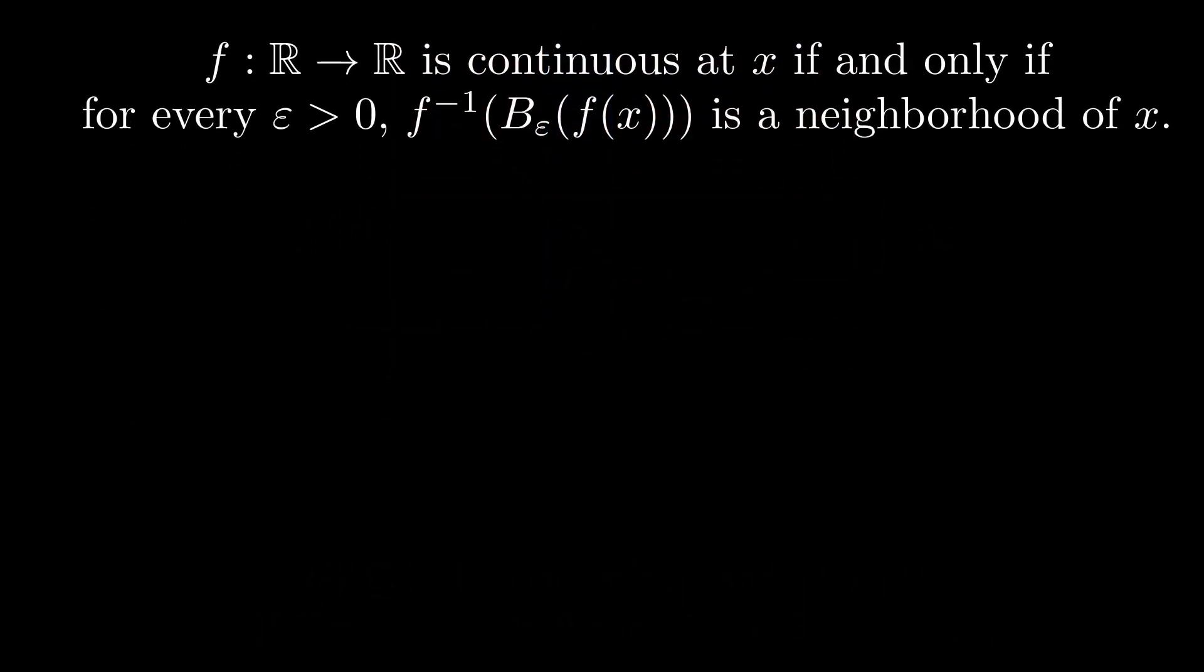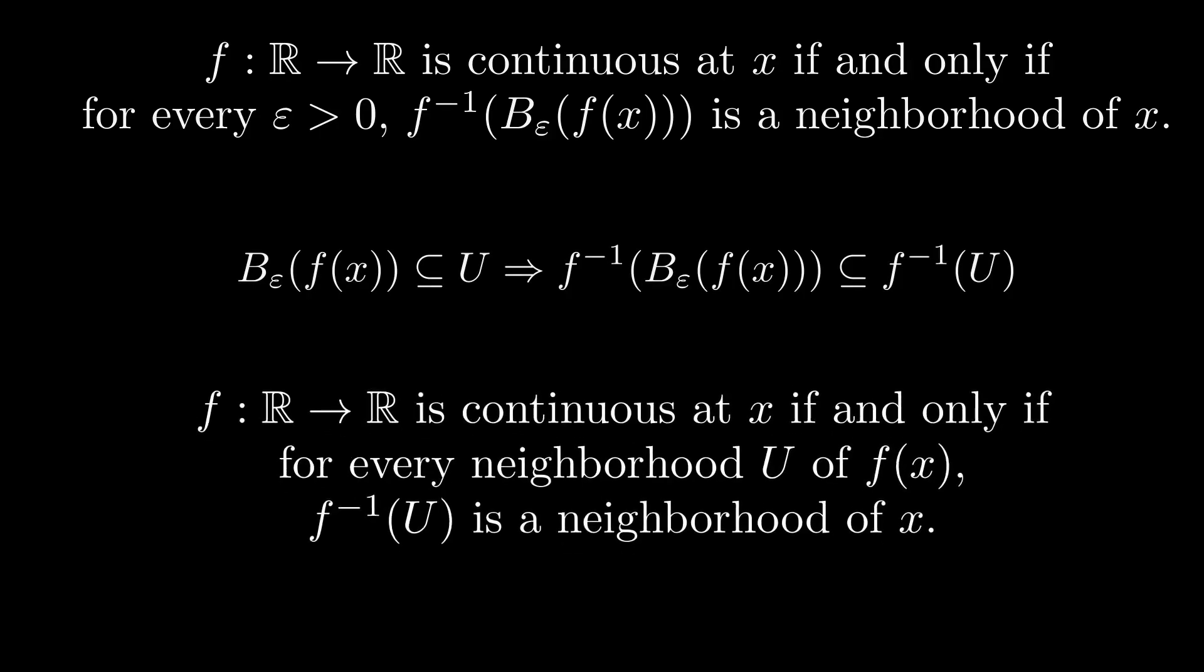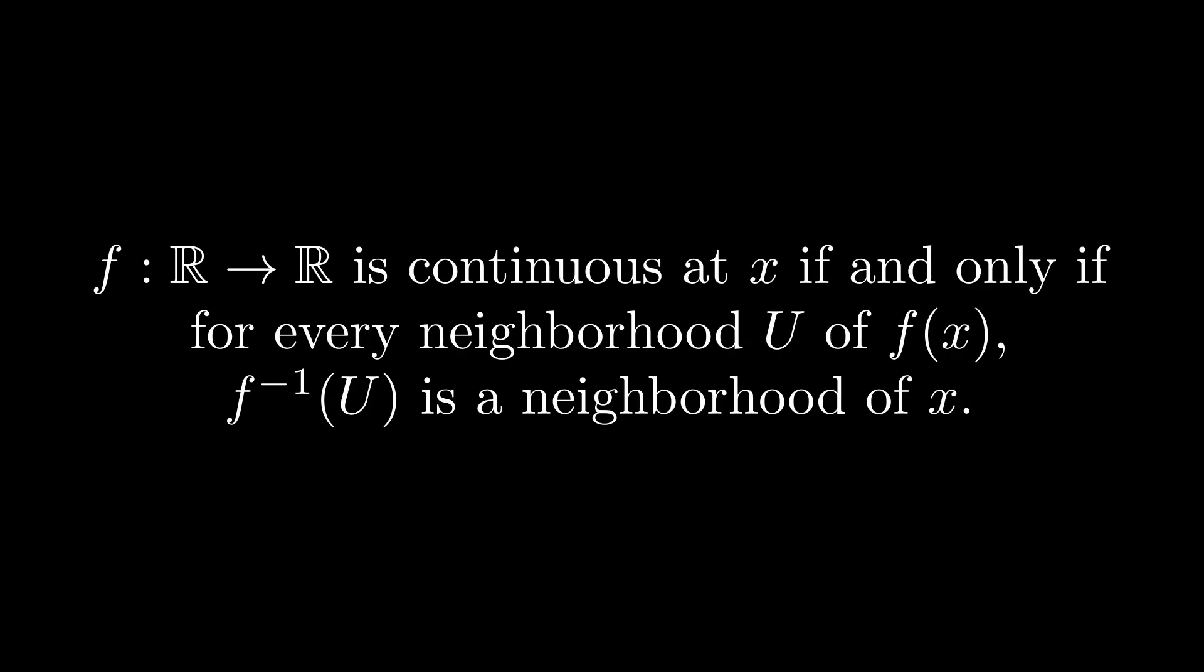We can rewrite this in a slightly more general form. If we take any superset U of an epsilon ball, then its pre-image is also a neighborhood of x, because pre-images preserve set inclusions. Hence, f is continuous at x if and only if the pre-image of every neighborhood of f of x is a neighborhood of x.